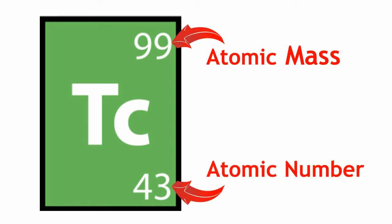These are different because the atomic mass is the total mass of the atom determined by its number of protons and neutrons, whereas the atomic number is the number of protons in the atom.